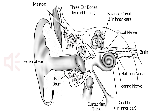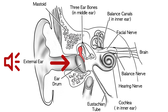Sound comes in through the ear canal, hits the eardrum, and goes through the three bones of hearing. The first bone of hearing is called the malleus, the second bone is the incus, and the third bone of hearing is the stapes.